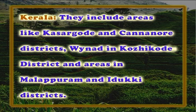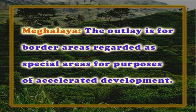In Kerala, there are a number of regions in the state which have been considered backward economically and socially. They include areas like Kasaragod and Kannur districts, Wayanad in Kozhikode district, and areas in Malappuram and Idukki districts. In Meghalaya, the outlay is for border areas regarded as special areas for the purpose of accelerated development. In West Bengal, the outlay is meant for the following backward regions: hill areas, North Bengal, Jangalmahal and Sundarbans.